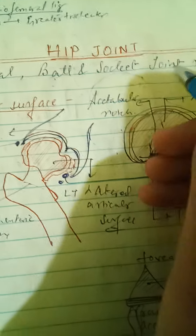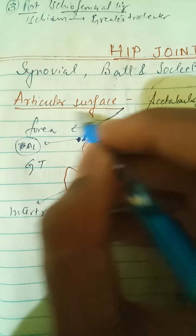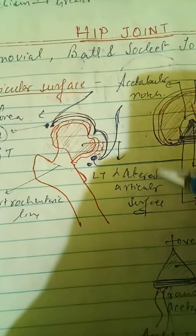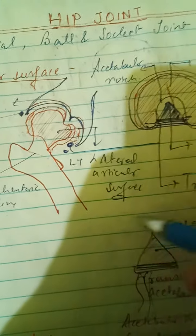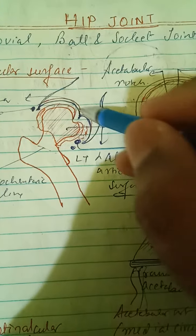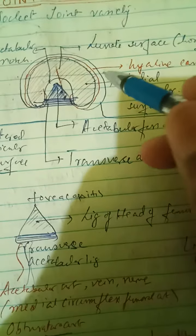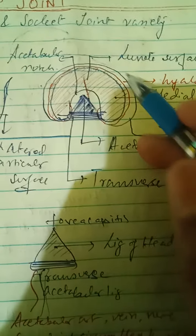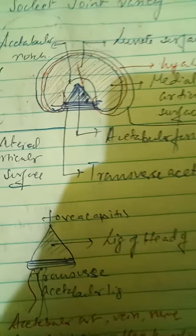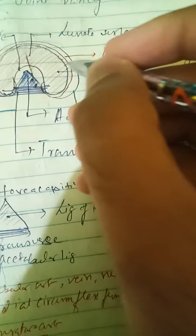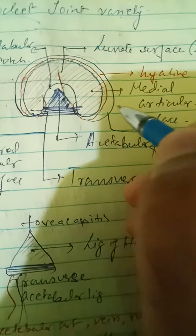The hip joint is a synovial type of joint — it is a ball and socket joint. There are two articular surfaces: the lateral articular surface, formed by the head of the femur, and the medial articular surface, formed by the acetabulum.